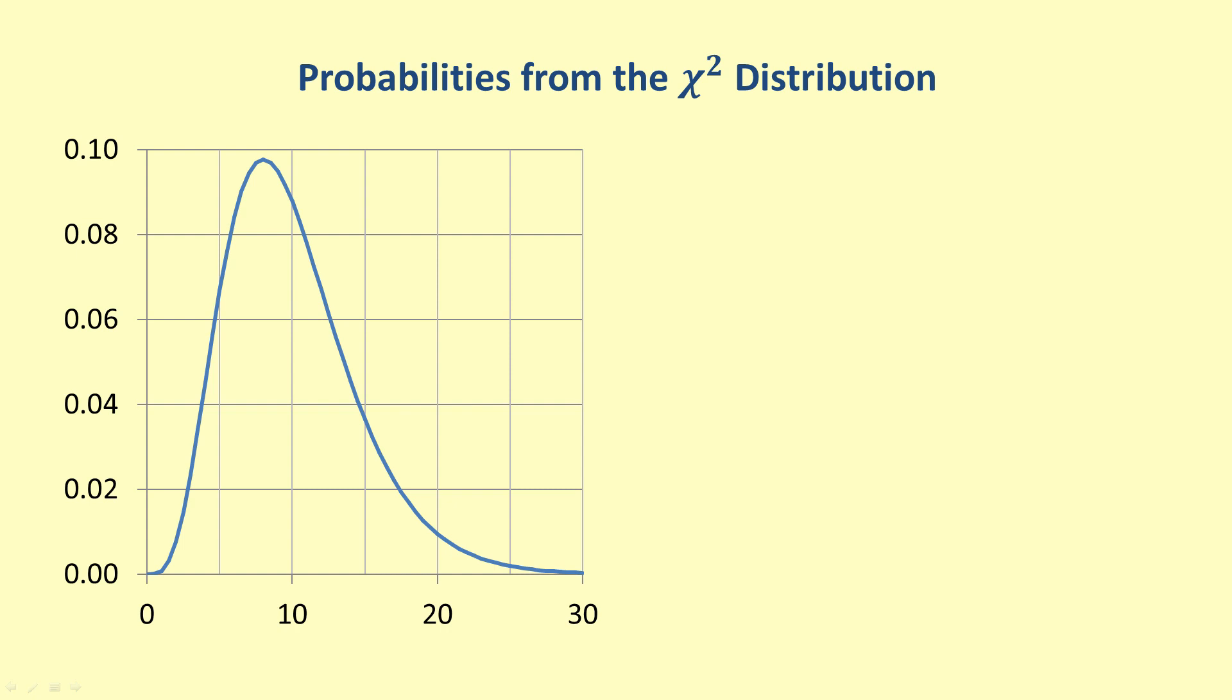One common area that is used for hypothesis tests is the right tail area. The right tail area is the area under the distribution to the right of a particular value of the chi-square statistic, which can be written as chi-square sub alpha, where alpha denotes the area, or probability, in the right tail.